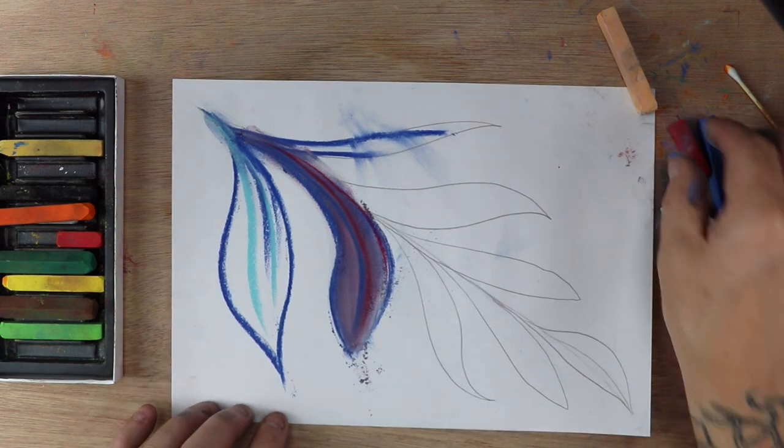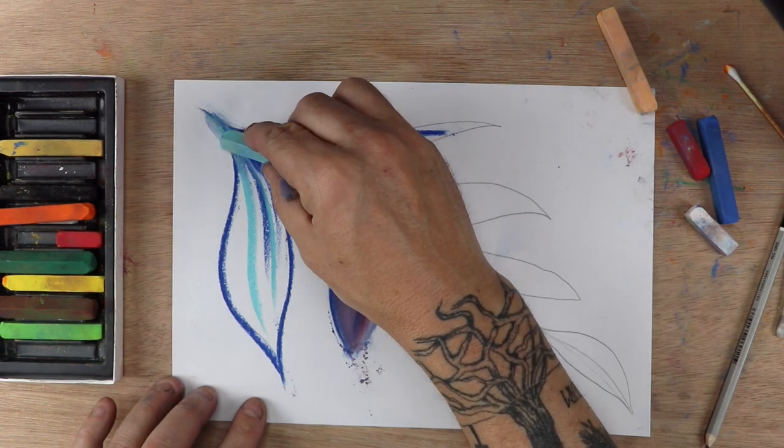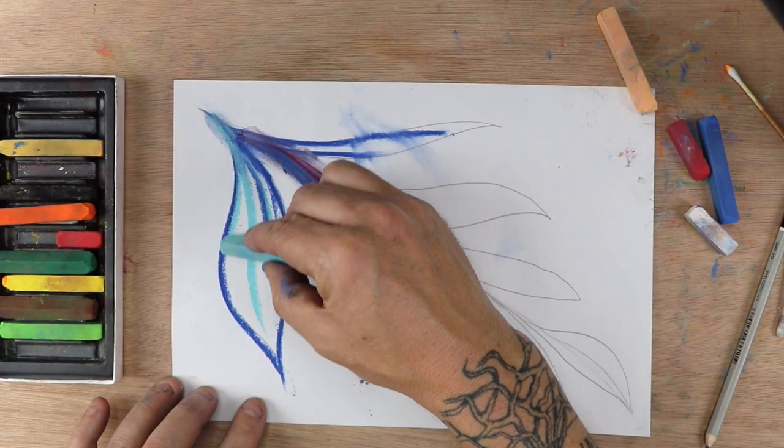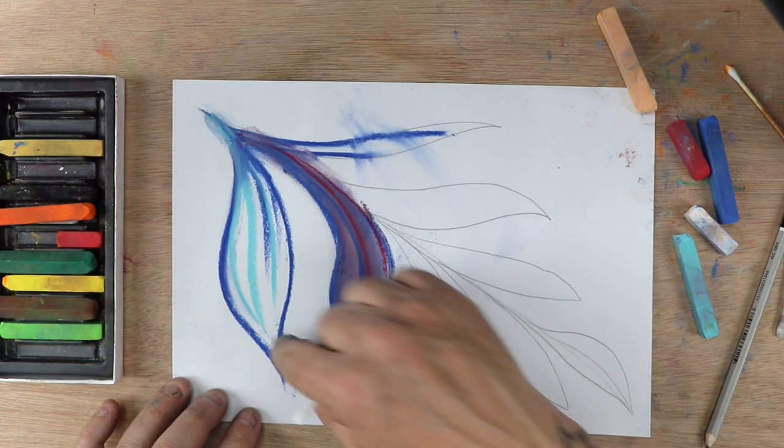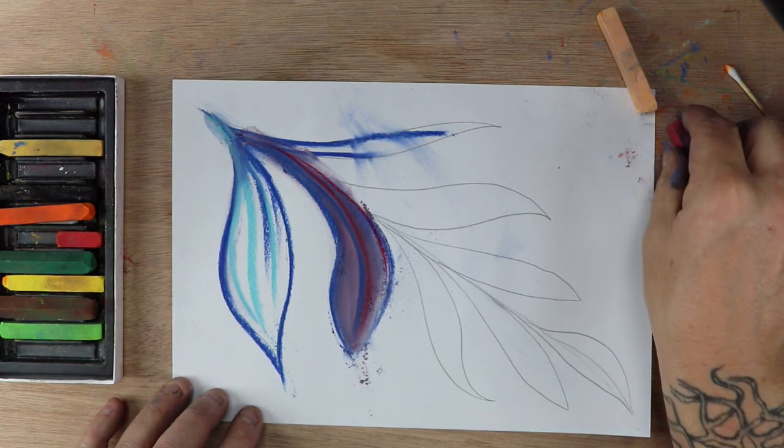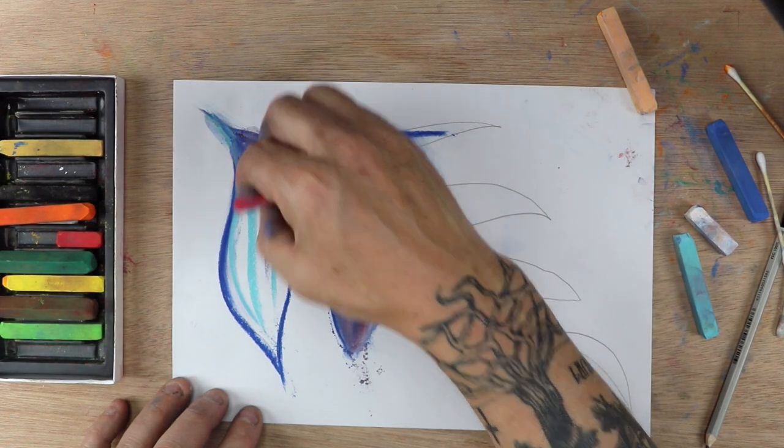So just work your way down each leaf, trying to blend together the colors that you've chosen. You can decide to use your finger mostly for the smudging, or you can use the cotton bud if you want to make it quite detailed.